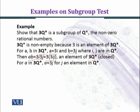So we choose an arbitrary element a in 3Q*, and a can be written as 3j for j belonging to Q*, nonzero rational numbers.